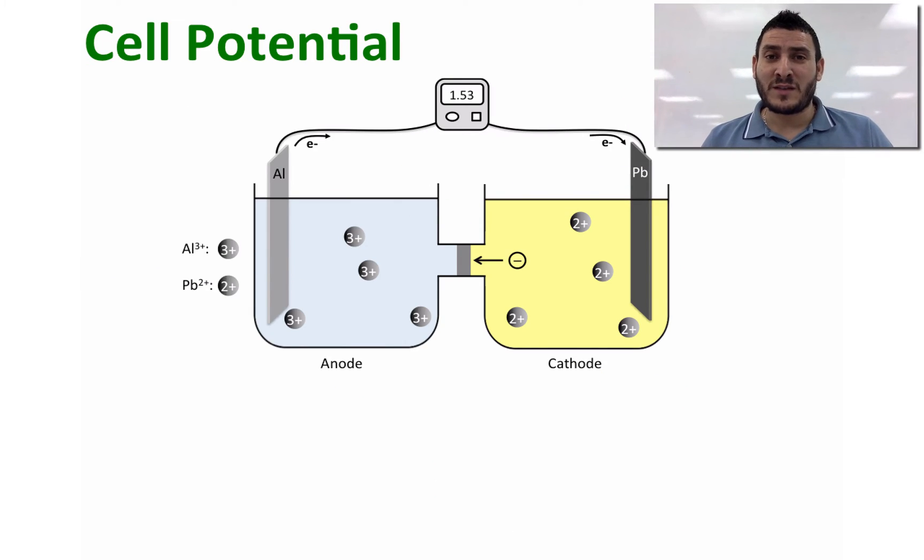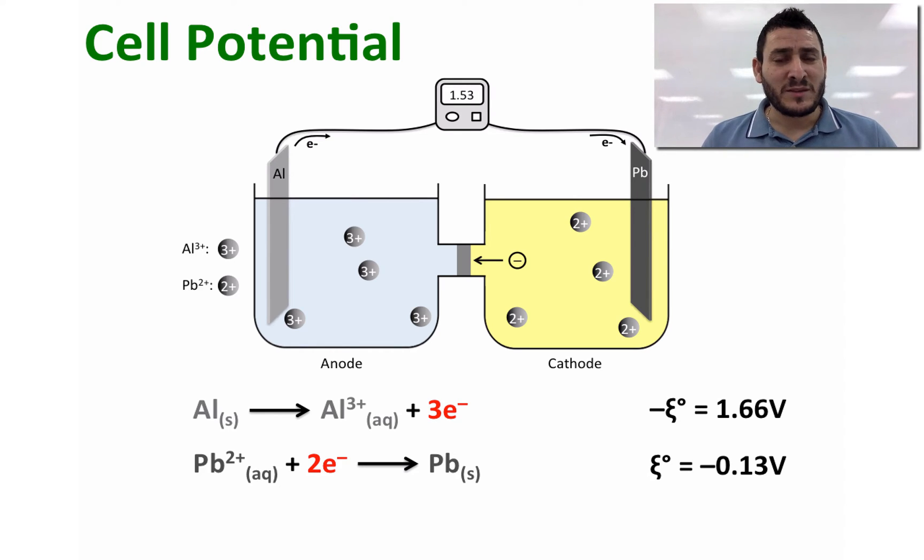So now, do you know how to calculate the cell potential of this galvanic cell? Take the corresponding half equations from the table, then flip the aluminum half equation because it's an oxidation happening at the anode. When we flip the half equation, we reverse the sign of the standard reduction potential. Therefore its negative E⁰ is equal to 1.66 V.